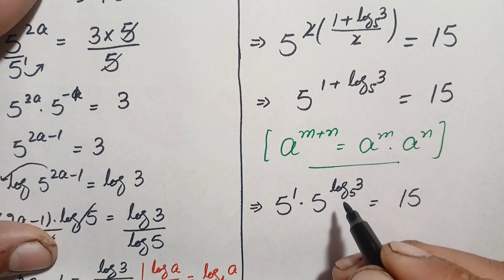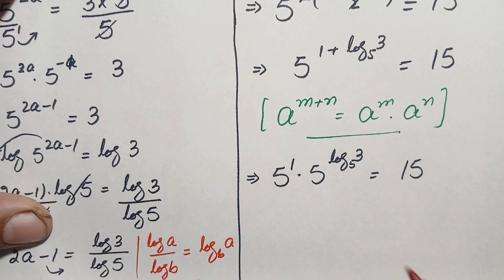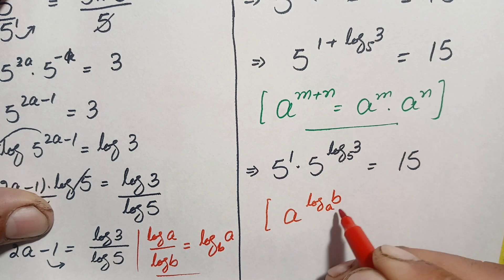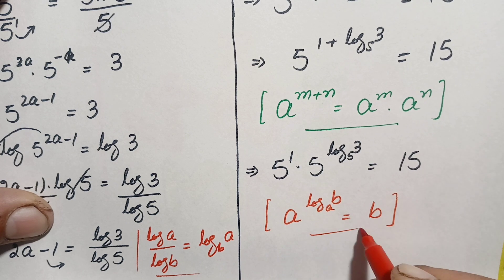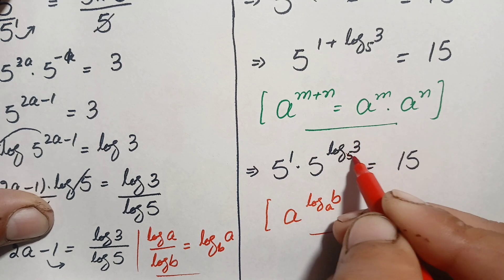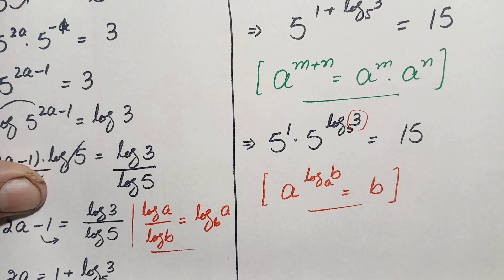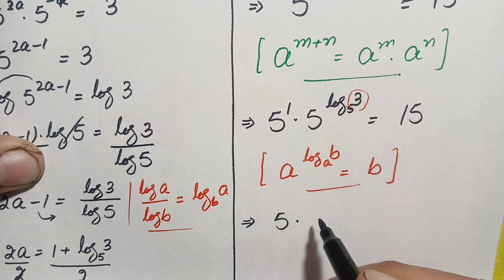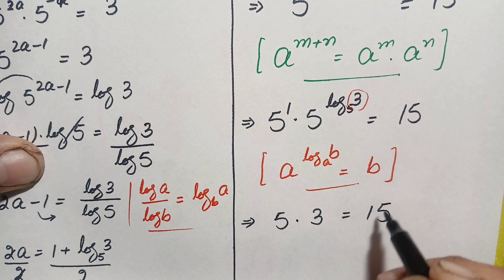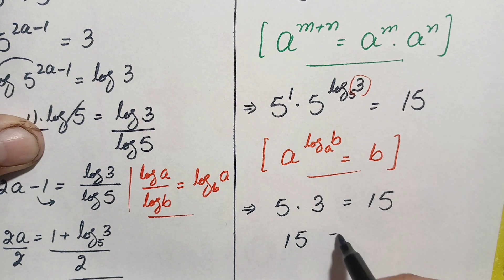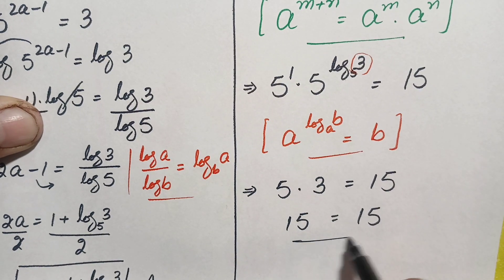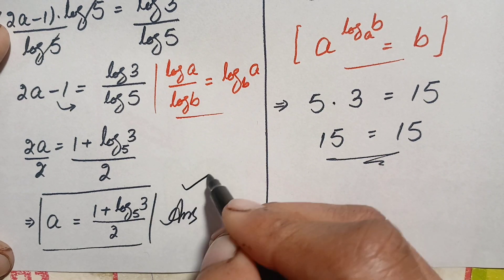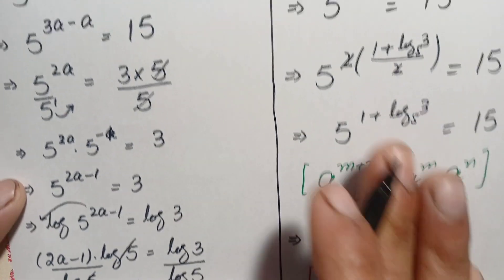Now we use the logarithm identity: a raised to power log base a of b equals b. So 5 raised to power log base 5 of 3 simplifies to 3. This gives 5 raised to power 1 times 3 equals 15, which is 5 times 3 equals 15, and so 15 equals 15. Since both sides are equal, a equals 1 plus log base 5 of 3 divided by 2 is confirmed as the exact and correct value of a in this exponential math problem.